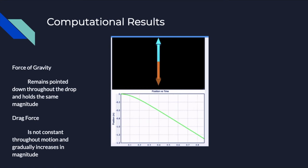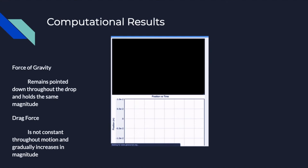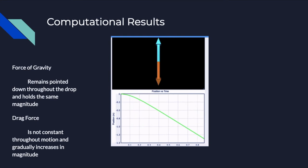According to the computational results, the force of gravity remains constant throughout the duration of the drop and always holds the same magnitude. However, the drag force initially begins at zero and quickly rises to a force that is equal to the force of gravity. According to Newton's third law, every force has an equal and opposite force.